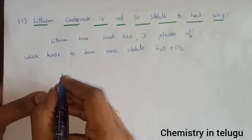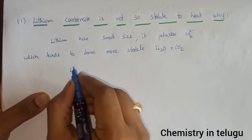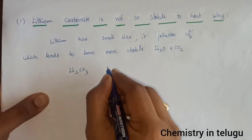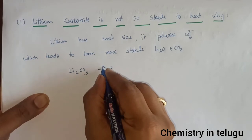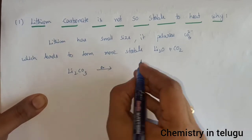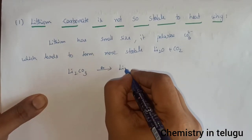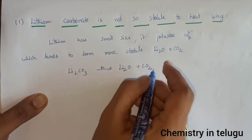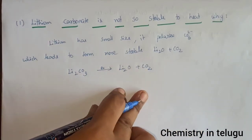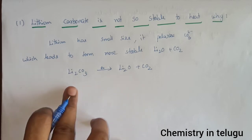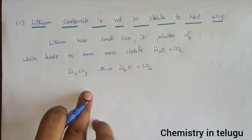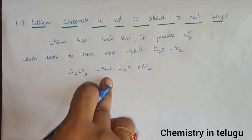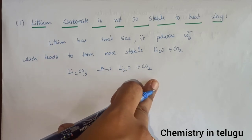Let's take a look at this equation — with a small amount of heat, lithium oxide and carbon dioxide are formed, which are stable components. So this is lithium carbonate — it is not stable. With just a little bit of heat, it decomposes into a stable component, lithium oxide and carbon dioxide.